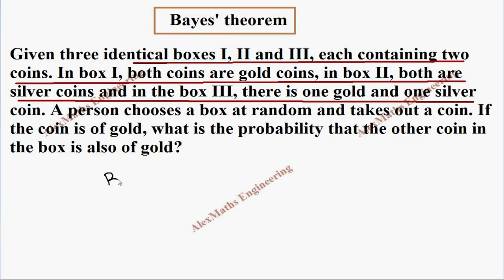In first box, both are gold. We represent G with gold coins. So, both are gold. And in box 2, both are silver. And in box 3, 1 gold and 1 silver. Now, that's what the question.